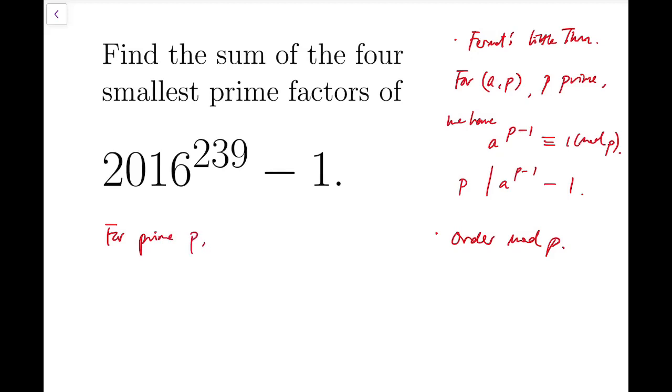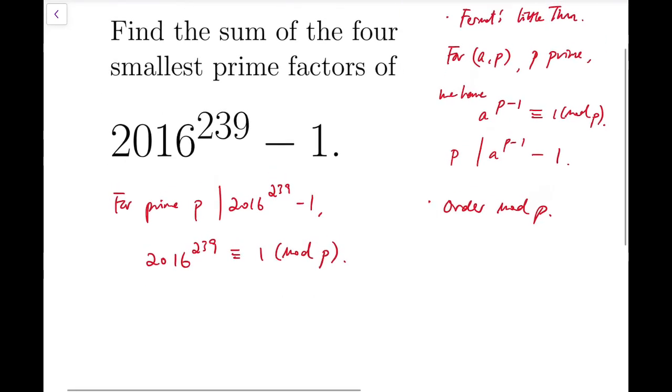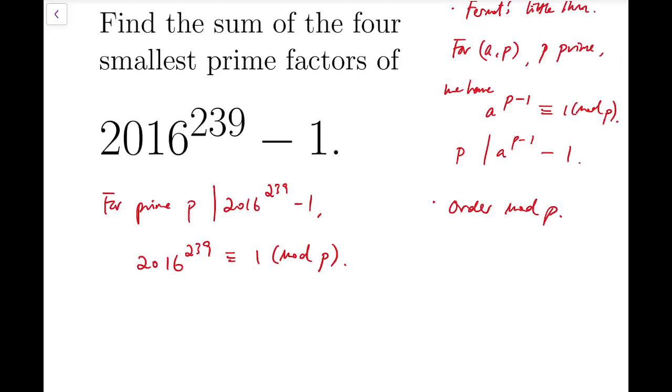For prime p that divides this number, we will have 2016 to the power 239 is congruent to 1 mod p. And the easiest prime factors can be found by considering if 2016 is congruent to 1 mod p.